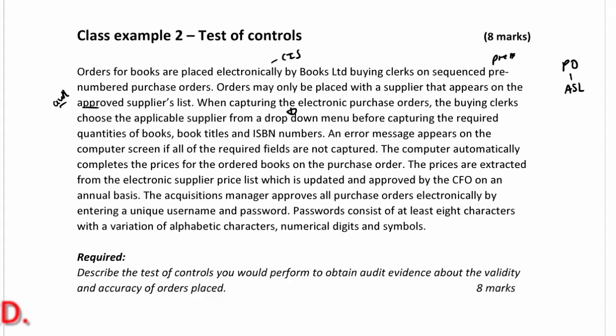The clerks must capture quantities, book titles, and ISBN numbers. An error message appears on the computer screen if all required fields are not captured — this is a prompt control, essentially a mandatory field or minimum entry requirement.